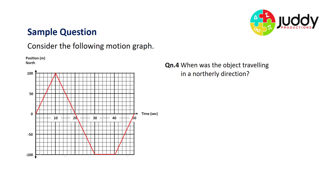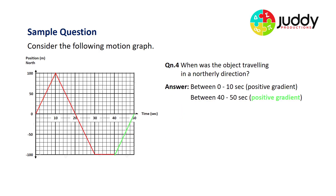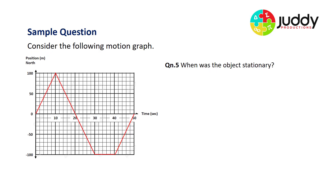Question four: when was the object traveling in a northerly direction? A northerly direction means a positive gradient. We have a positive gradient between 0 and 10 seconds and also between 40 and 50 seconds — both identifiable by the positive gradient and the y-axis indicating positive values are north. Question five: when was the object stationary? Stationary means a speed of zero, represented by a gradient of zero — between the 30 and 40 second mark.